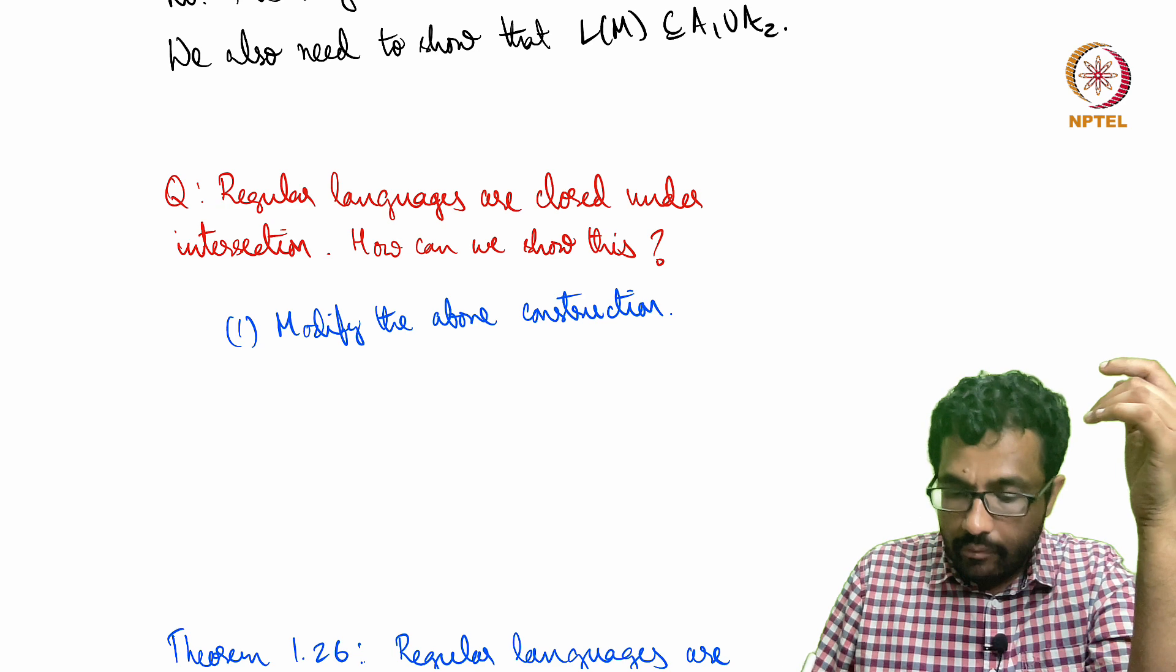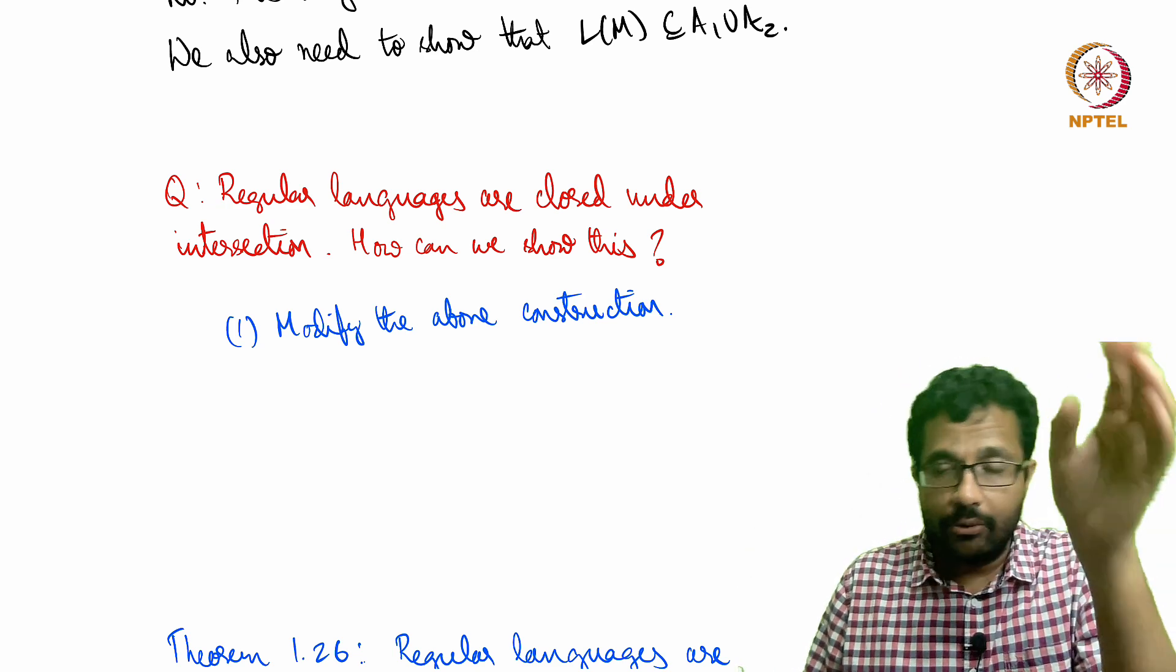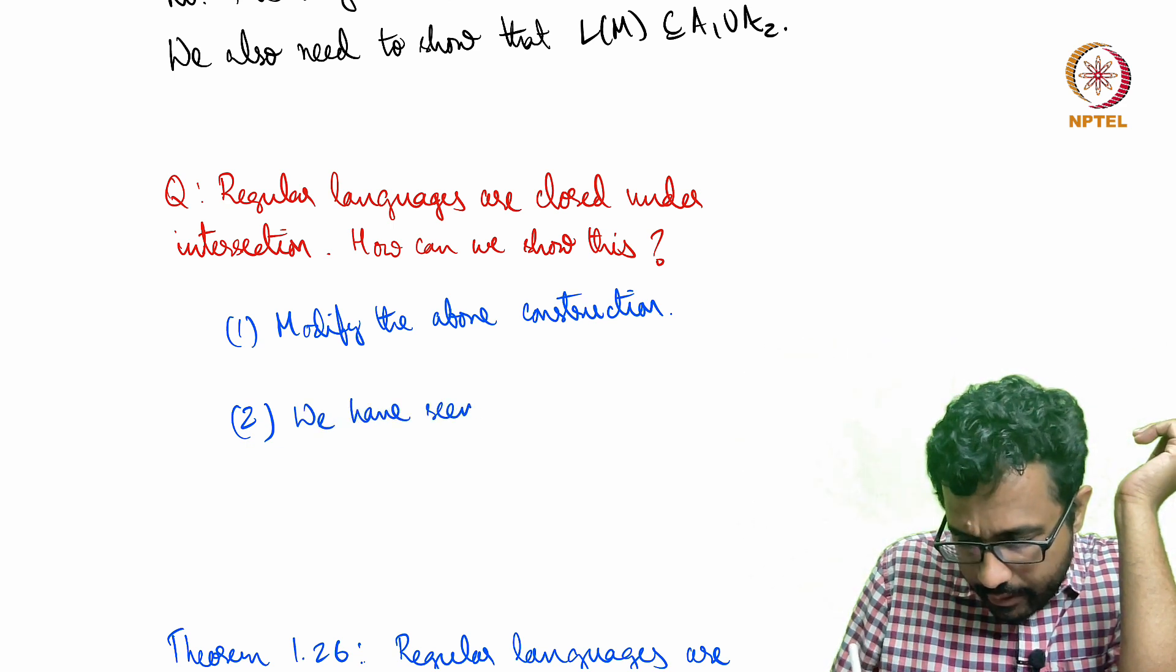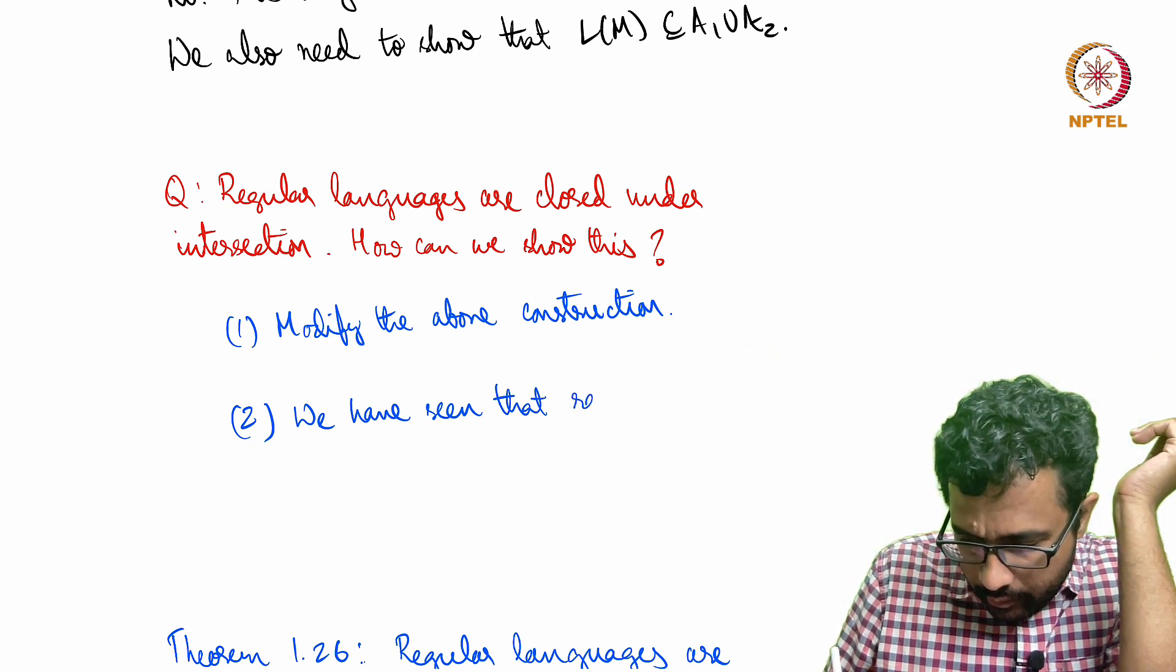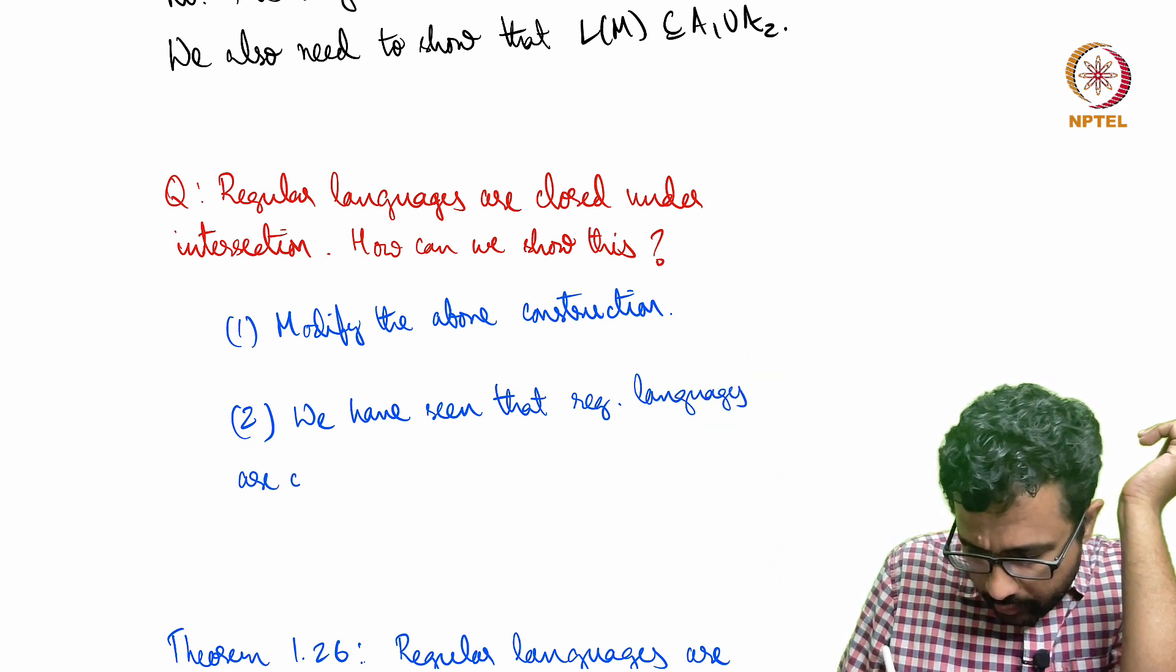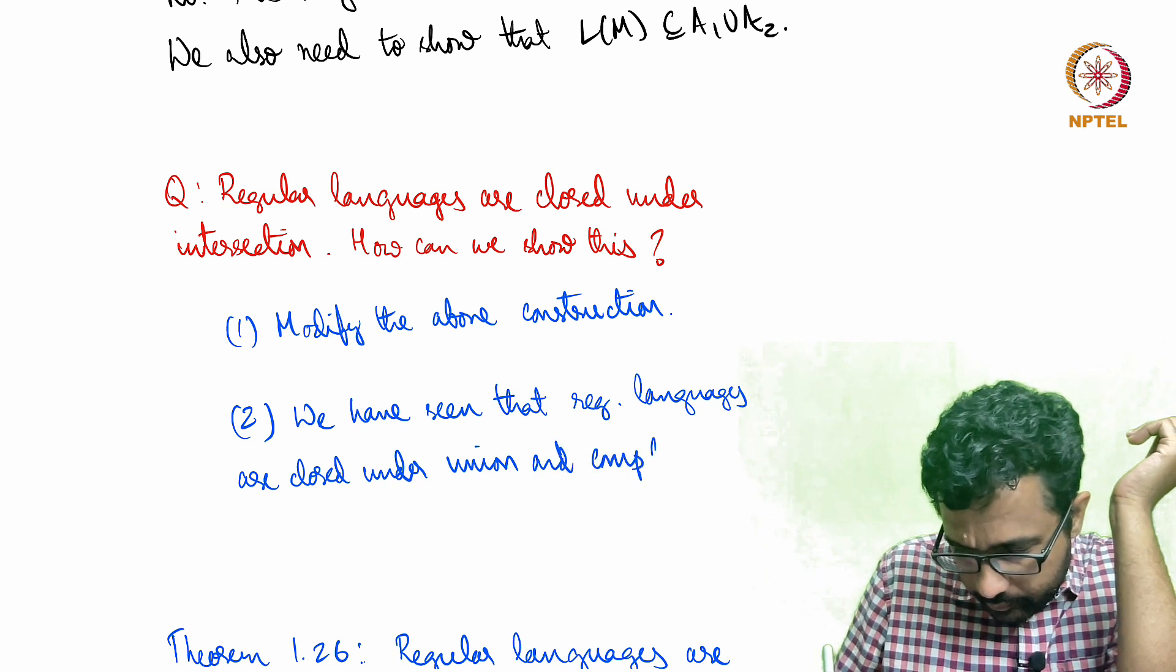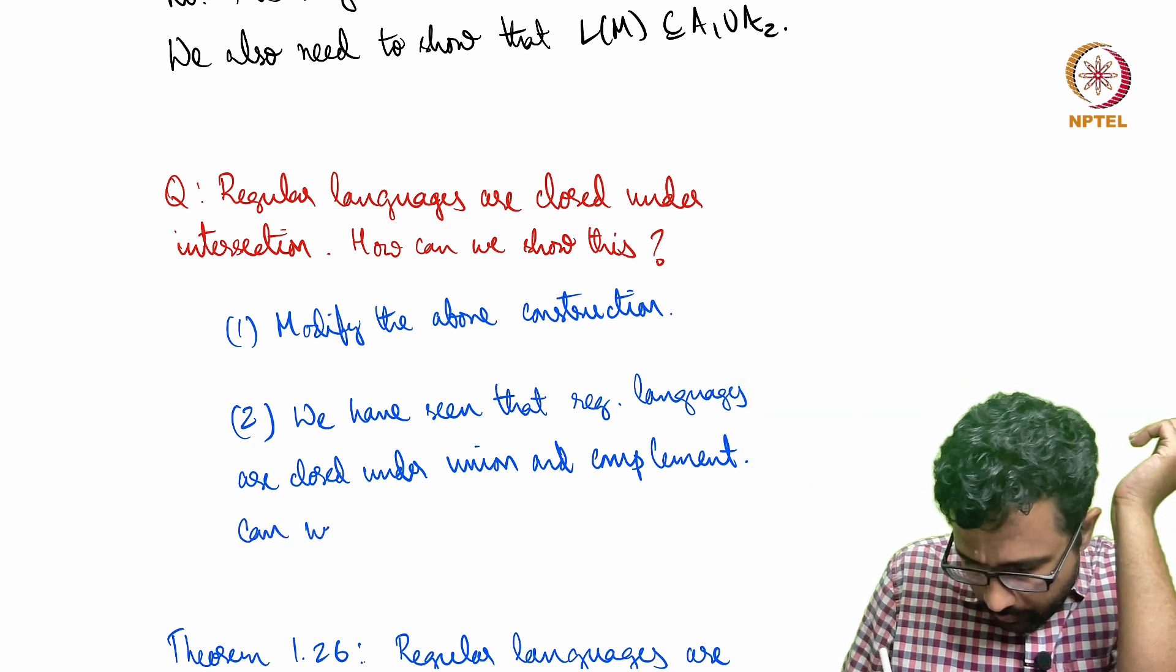We want to show that if A1 and A2 are regular, then A1 intersection A2 is also regular. The second approach is simpler: we have seen that regular languages are closed under union and complement. Can we combine this?